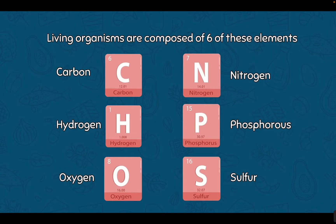The good news is living organisms are really composed of only six of these elements. So out of 118, all living organisms' majority makeup comes from just six: carbon, hydrogen, oxygen, nitrogen, phosphorus, and sulfur. These are really the main components of our chemistry.